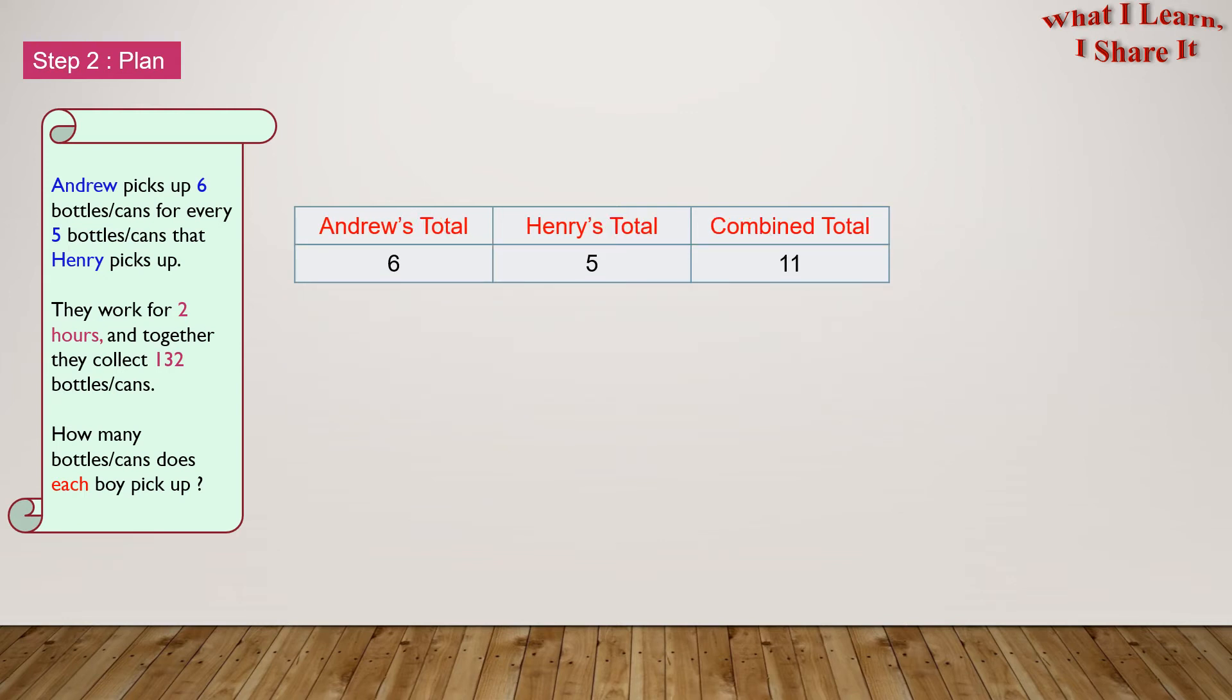Let's put this in totals now. Andrew's total is 6, Henry's total is 5, and the combined total is 11. For the second time, 6 plus 6 equals 12 for Andrew, 5 plus 5 equals 10 for Henry, and 11 plus 11 equals 22 for the combined total. We added that to our table. Andrew's total is 12, Henry's total is 10, and the combined total is 22.